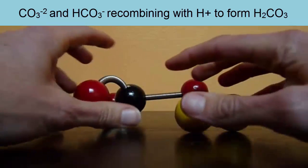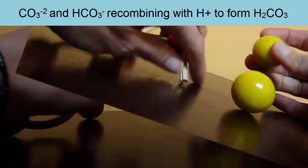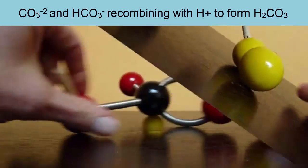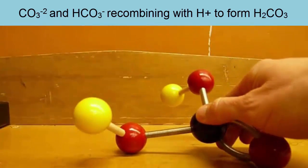Here you see a carbonate ion picking up a hydrogen ion to become bicarbonate, and a bicarbonate picking up another hydrogen ion to become carbonic acid, thus removing excess hydrogen from the surroundings.